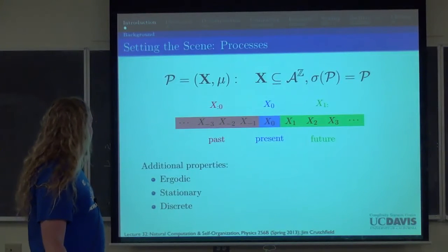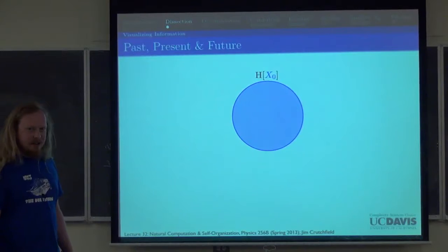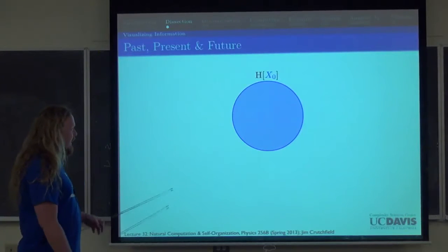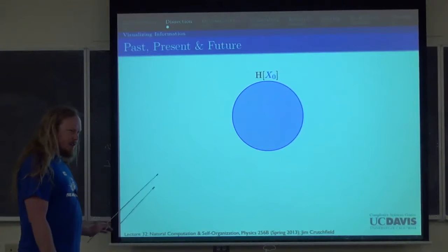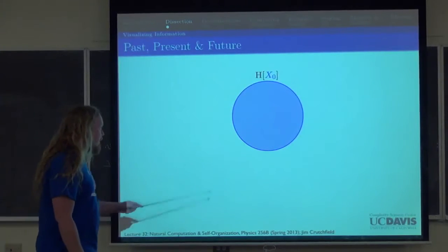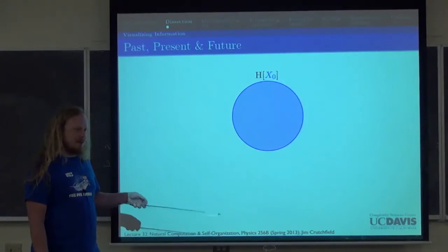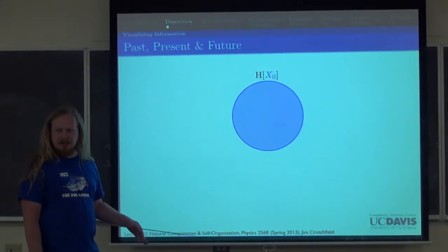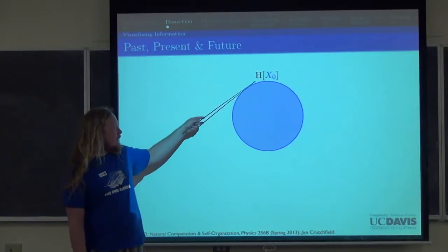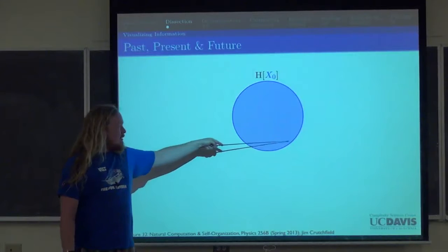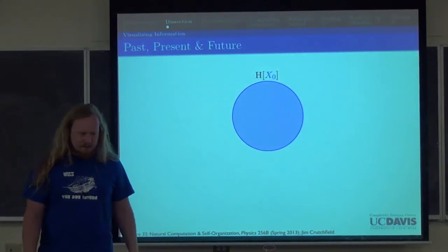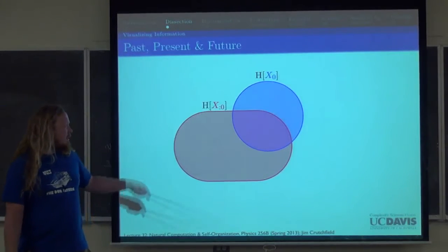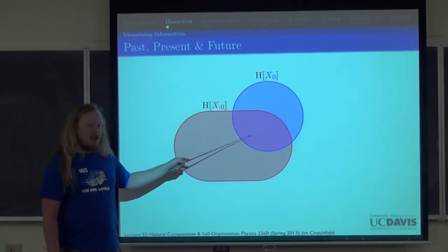Given this notation, let's consider the present. We're going to use I-diagrams to get to the heart of what we're talking about. We can represent random variables using Venn diagrams because of the duality between set-theoretic and information-theoretic operators. Entropy is similar to set cardinality, so here we have the information contained in the present.